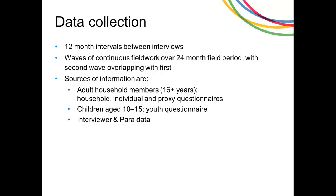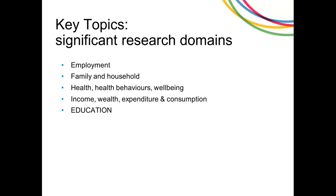The main sources of information we collect come from adults aged 16 and older at both household and individual level, and through proxy questionnaires if one adult is unavailable. A special component is that we directly interview children aged 10 to 15 through a dedicated youth questionnaire. There is also information from interviewers and data created through the interview process itself. Understanding Society covers key research domains including employment, family and household, health, income and wealth, and — of particular interest today — education.